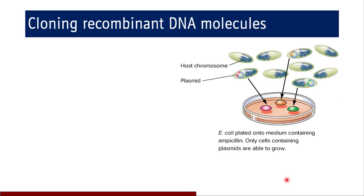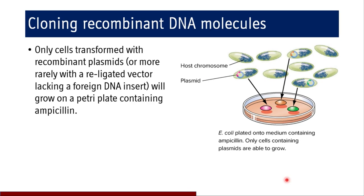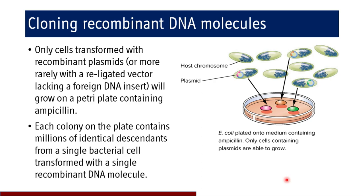We can isolate those cells, and those will be the only cells transformed with recombinant plasmids — or more rarely with religated vector lacking a foreign DNA insert — that will grow on a petri plate containing ampicillin. We can isolate those cells from the colonies grown on the agar plate. Each colony on the plate contains millions of identical descendants, all from a single bacterial cell transformed with a single recombinant DNA molecule. This covers synthesis of recombinant DNA molecules and the subsequent cloning procedure to identify effective transfer of the recombinant DNA molecule to the cell of interest.